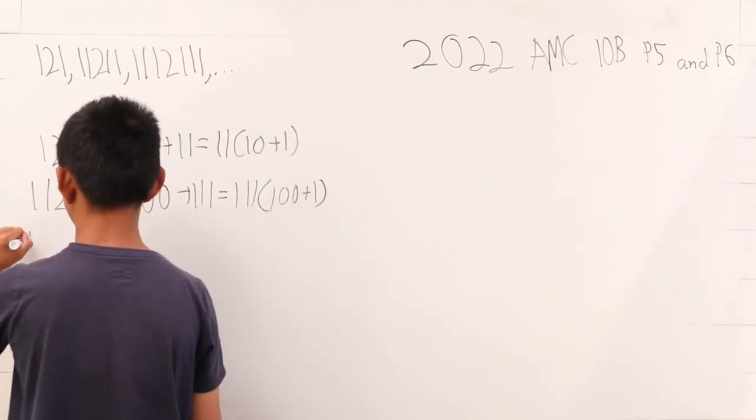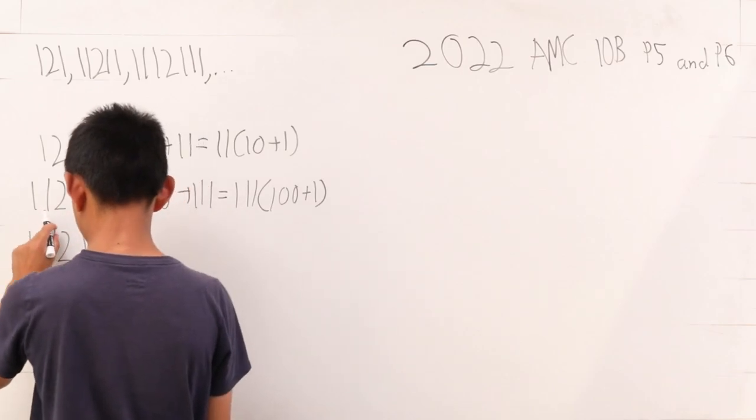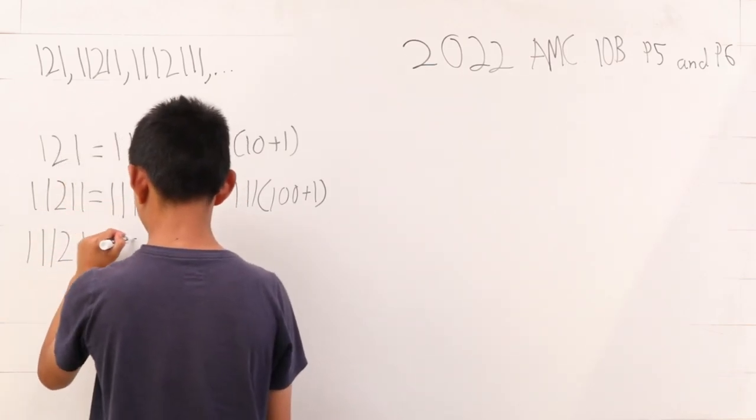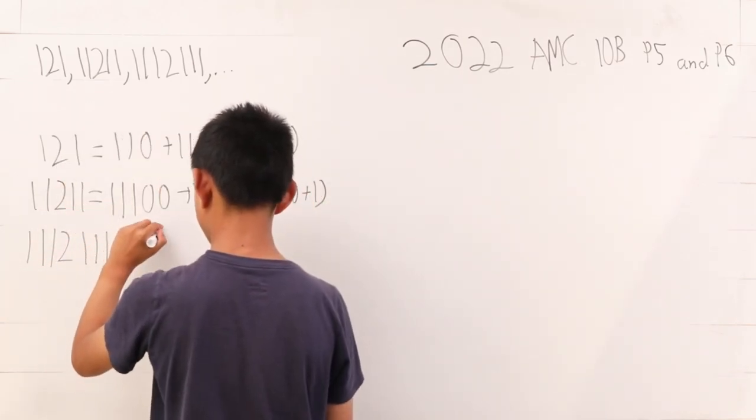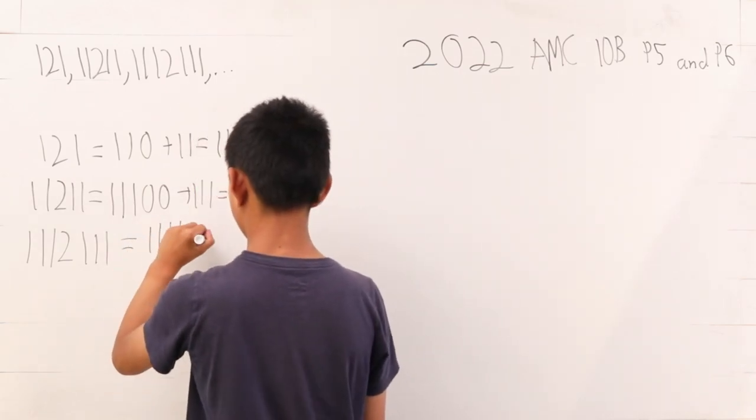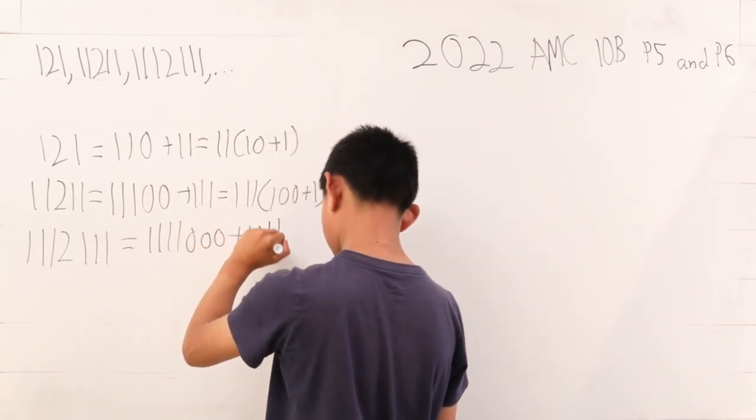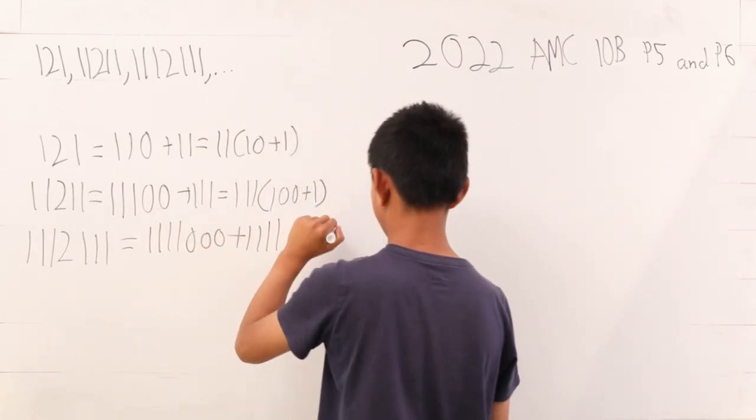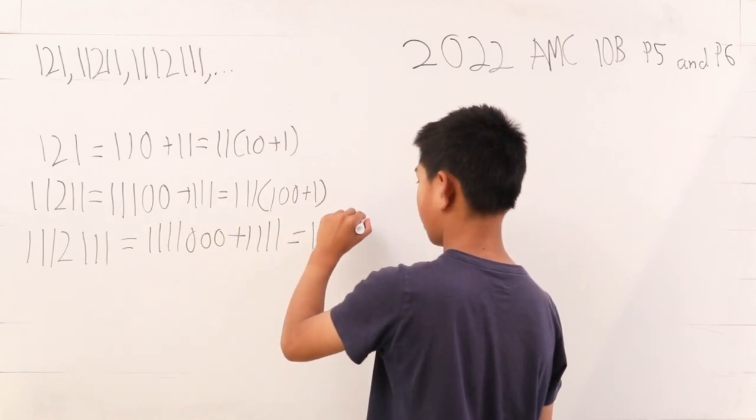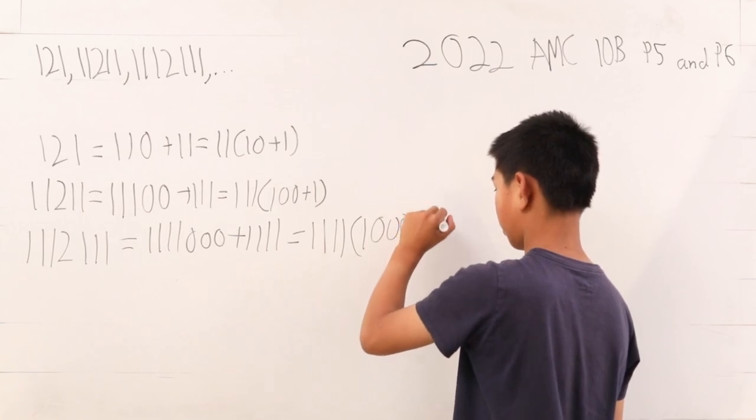Let's move on to our third number: 111211. Bear with me. This is four 1s, and then three 0s plus five 1s. We factor out the 1111. We get 1111 times (1000 plus 1).